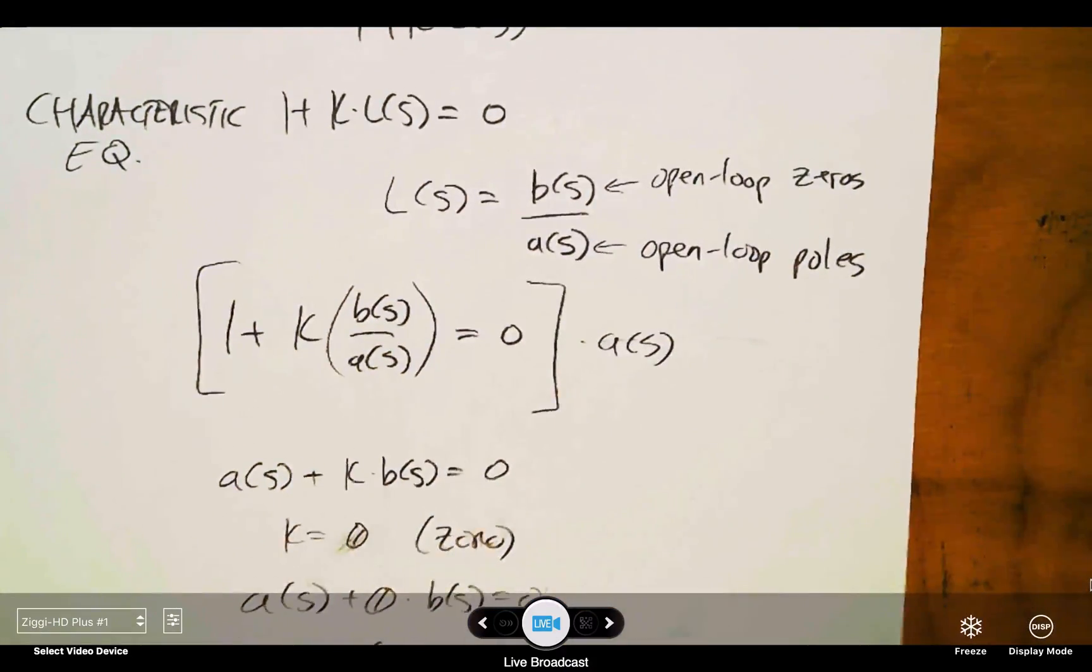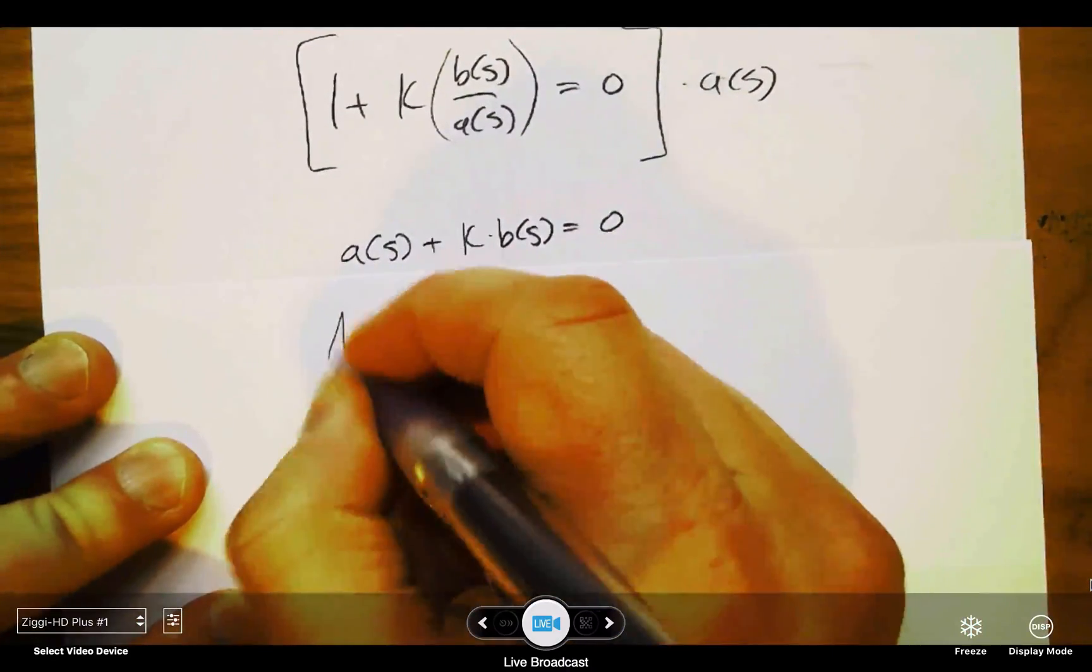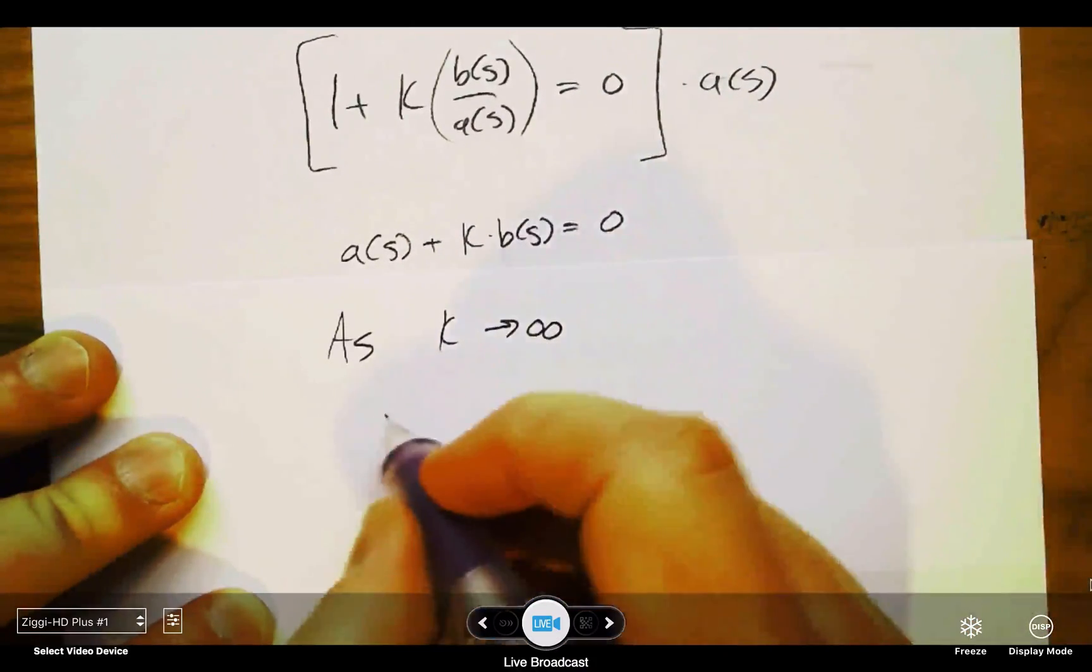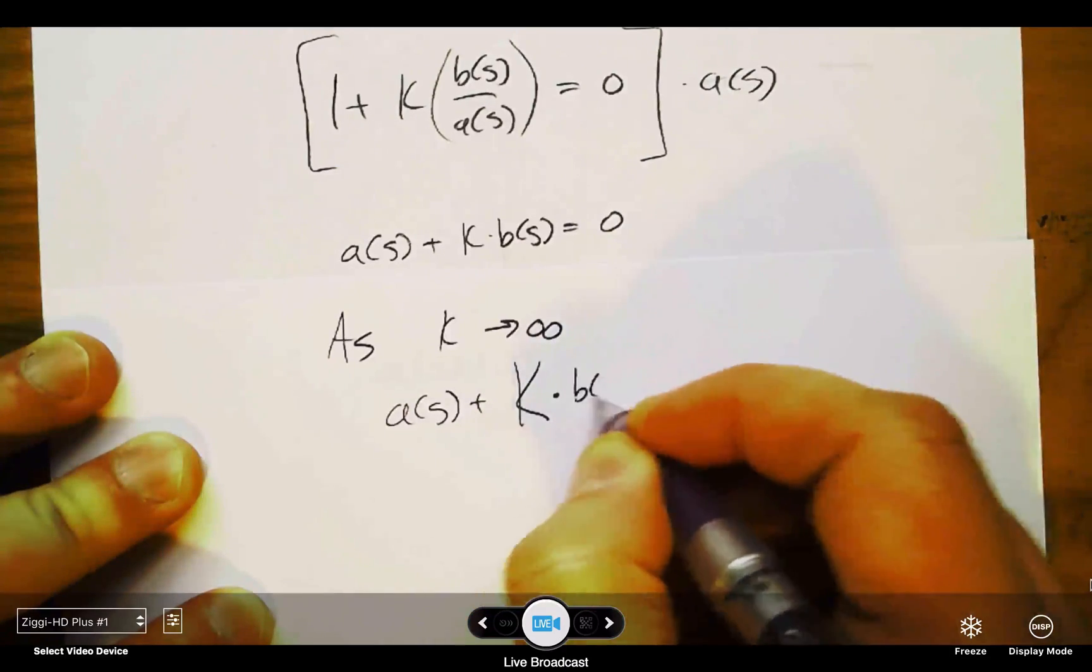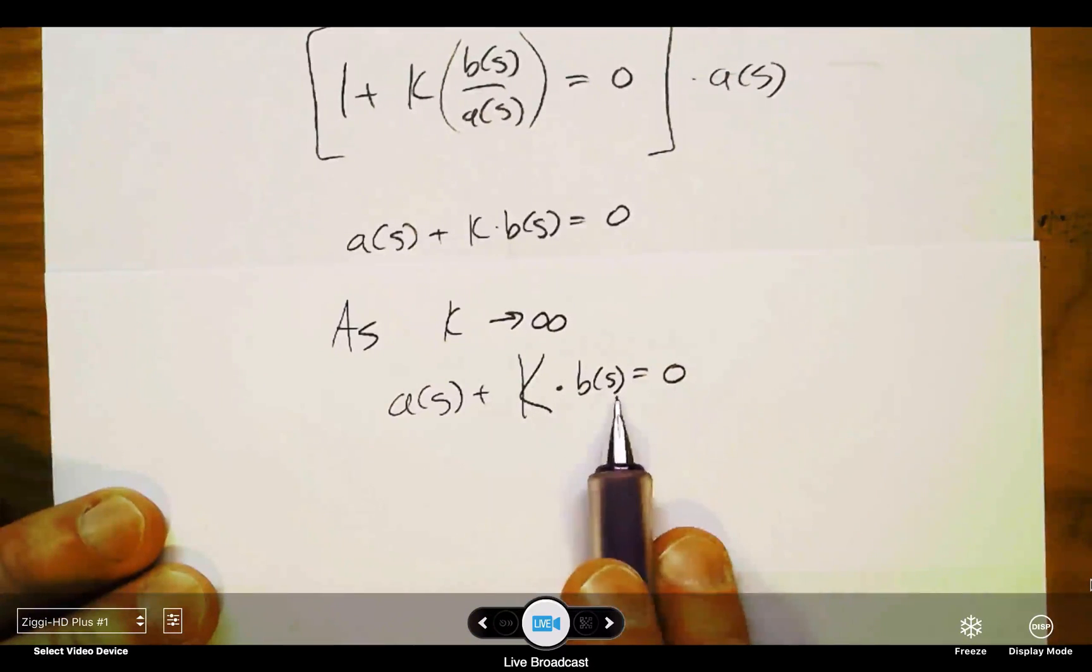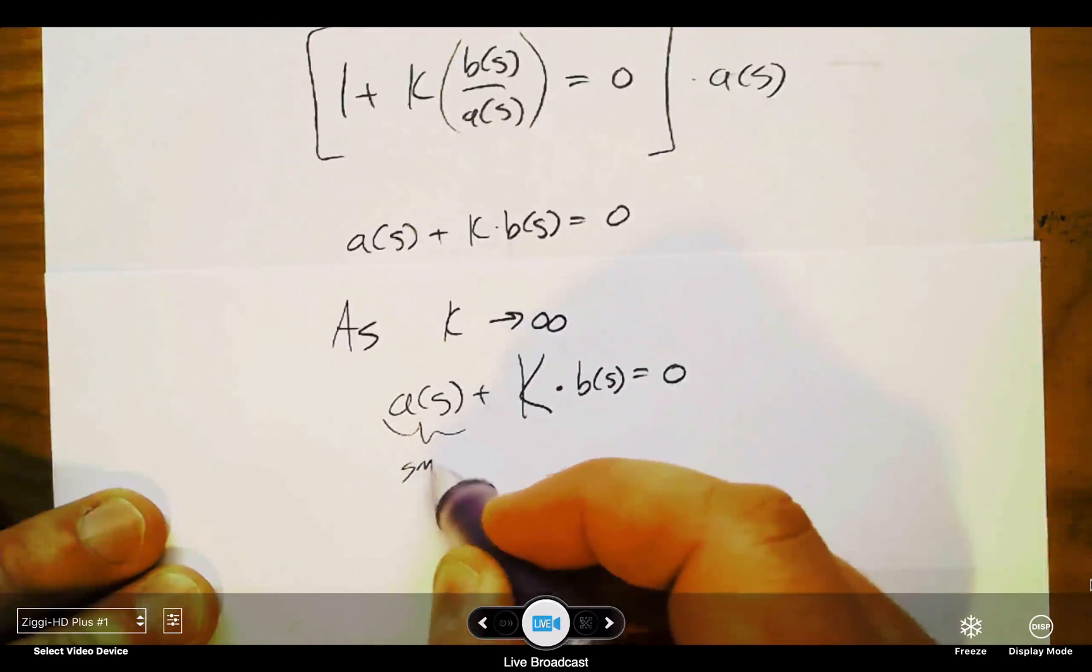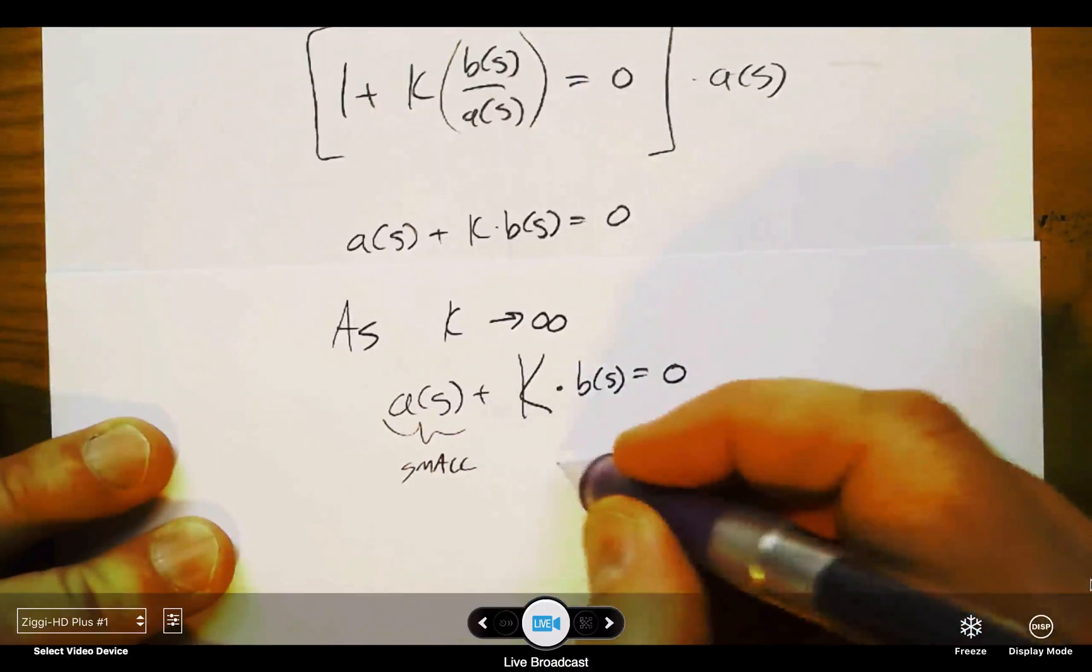Okay. What happens in the opposite case when k gets very, very large? As k approaches infinity, I'm left with a(s) plus this really large k times b(s). Well, if that's the case, really large k times b makes this seem unimportant or very small by comparison.